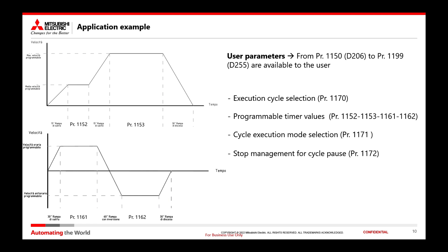Before concluding, I wanted to show a more advanced application example to give an idea of the potential of the integrated PLC. The parameters available to the user have been used to create different functions. Parameter 1170 allows you to select the machine cycle between the standard one and the one with a reversal of direction. The various parameters for the programmable timers, which in addition to being retentive, resume from the stored value in the event of a stoppage, also allow the user to decide the time interval at constant frequency. Parameter 1171 allows you to select the cycle execution mode: if it's 0, it's executed only once; if it's 1, it's executed in loop mode.